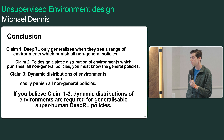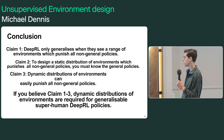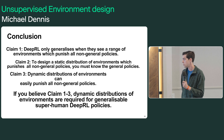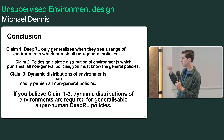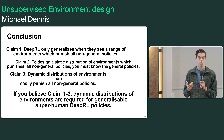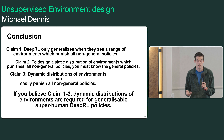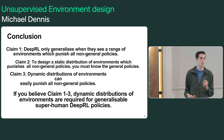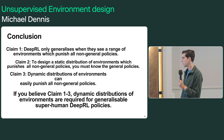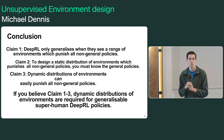If you believe claims one through three, then dynamic distributions of environments are required for generalizable superhuman deep RL policies. 'Superhuman' because claim two requires that if you're going for a policy a human player could do, maybe you can painstakingly describe a distribution of environments. But if you're going for superhuman policies, you're not going to be able to anticipate all the possible edge cases. So if you take all three claims together, you're forced to use dynamic distributions of environments or dynamic distributions of data in order to make generalizable policies.